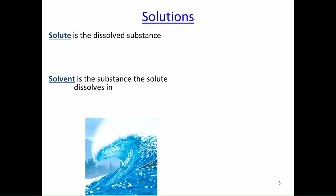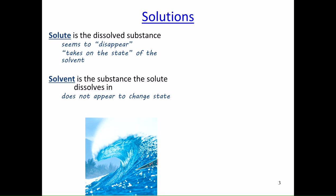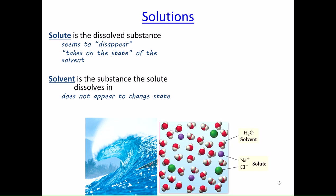A solute is the dissolved substance — what's inside the solvent — and the solvent is the substance that the solute dissolves in. When the solute dissolves in the solvent, it seems to disappear and takes on the state of the solvent, while the solvent doesn't appear to change states. In salt water, for example, sodium and chloride particles are evenly dispersed within the mixture — sodium and chloride are the solute, and water is the solvent.